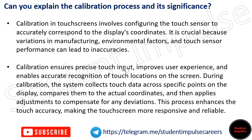Can you explain the calibration process and its significance? Calibration in touch screens involves configuring the touch sensor to accurately correspond to the display's coordinates. It is crucial because variations in manufacturing, environmental factors, and touch sensor performance can lead to inaccuracies. Calibration ensures precise touch input, improves user experience, and enables accurate recognition of touch locations. During calibration, the system collects touch data across specific points, compares them to actual coordinates, and applies adjustments to compensate for any deviations, making the touch screen more responsive and reliable.